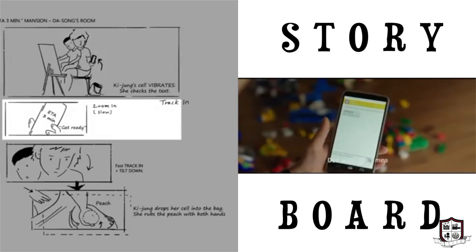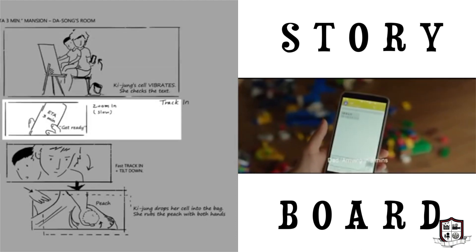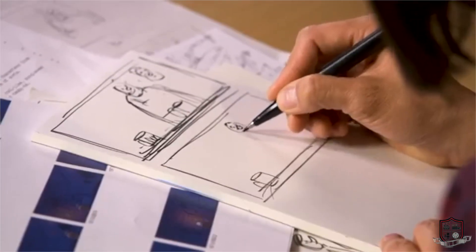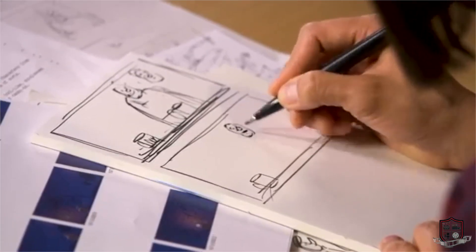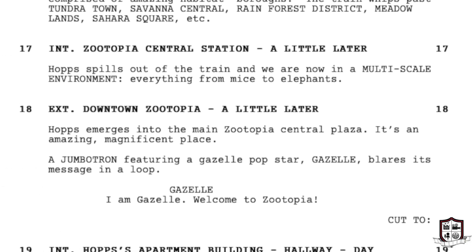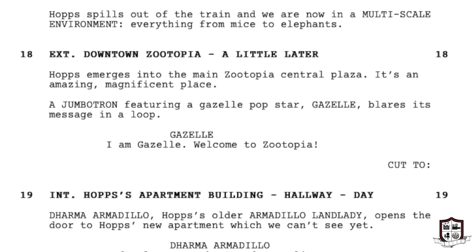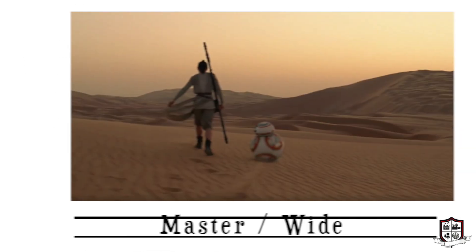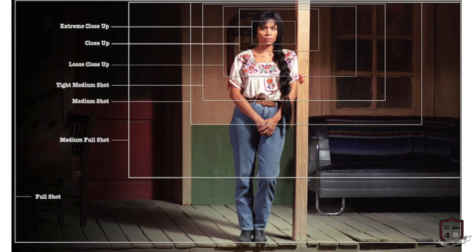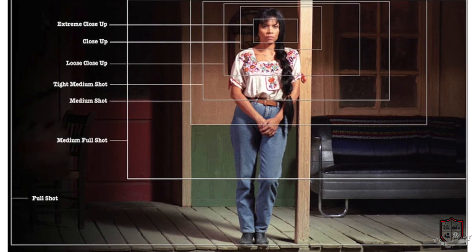Storyboarding and cinematography go hand in hand as filmmakers figure out how to tell their story visually using the language of film. Meaning, should this chunk of action and dialogue be shot in wides, mediums, close-ups, high angle, low angle, all of the above, and why?